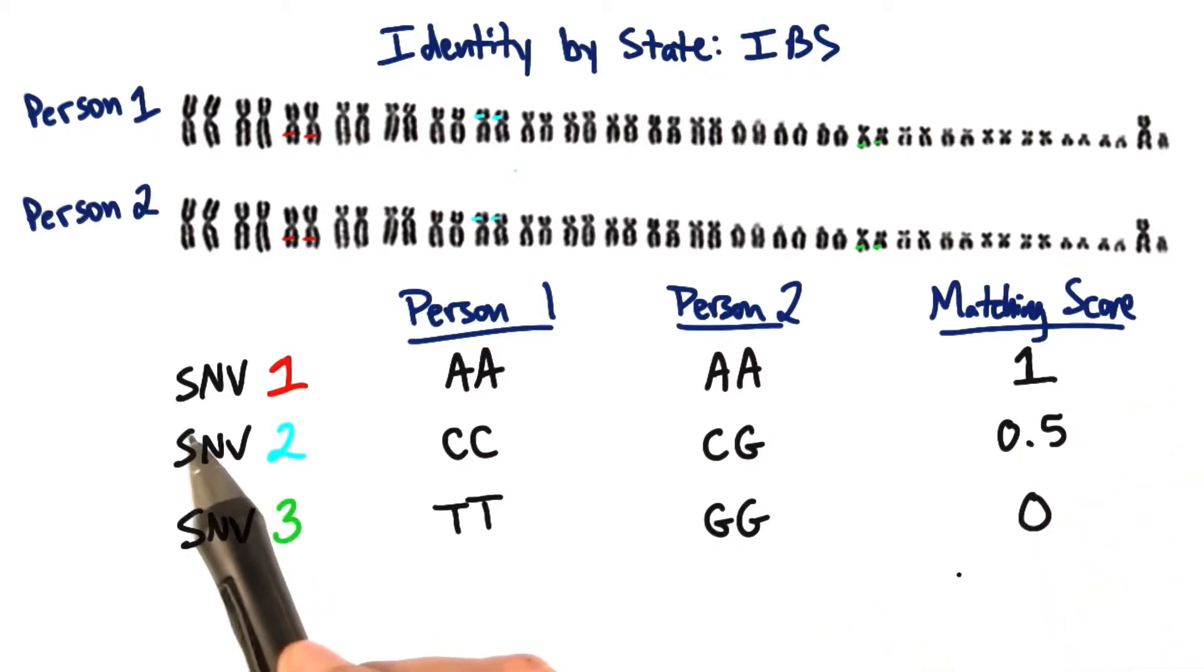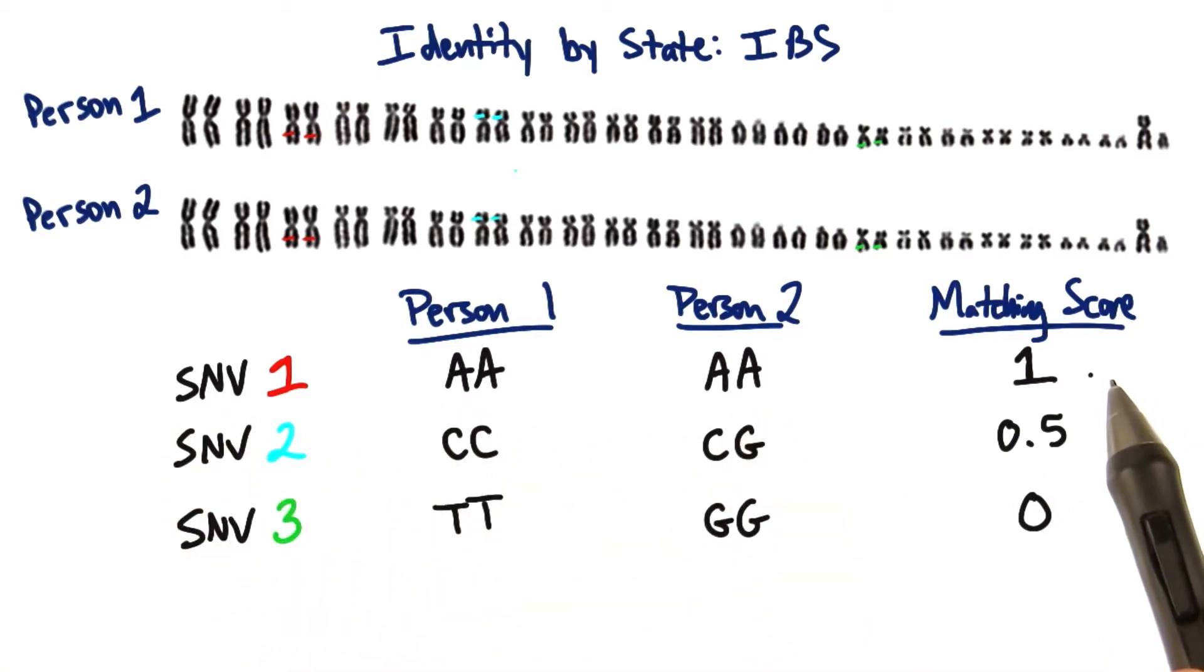So in each case, we could look at each individual SNV and make a comparison from person 1 to person 2 and assign a score of either 1, 0.5, or 0.